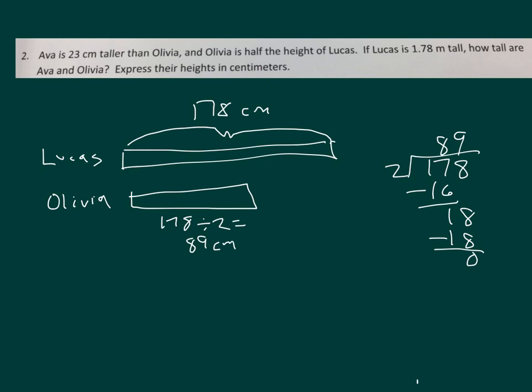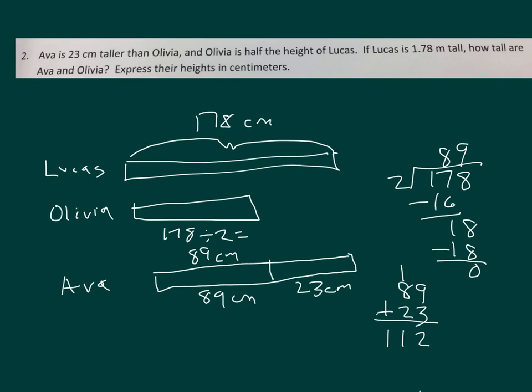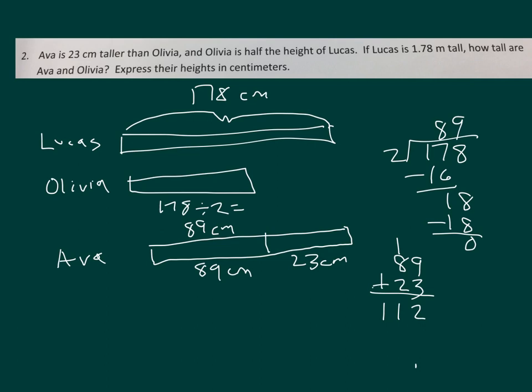Now that I know how tall Olivia is, it says Ava is 23 centimeters taller than Olivia. Ava, her bar, is 23 more than Olivia. Olivia, we already noticed, 89 centimeters. So they put together 89 centimeters with 23 centimeters. We do what with those two numbers? Right, add them. 9 and 3 is 12. 2, regroup of 1. 8 and 2 is 10. Plus 1 is 11. So Ava is 112 centimeters tall. Lucas is 178 centimeters tall. And Olivia is 89 centimeters tall.